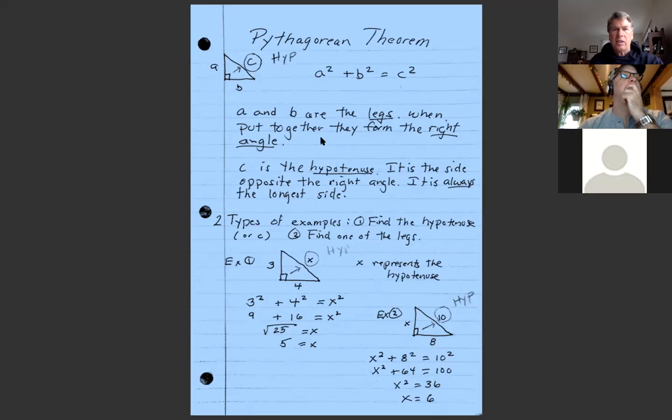From here we get two types of examples that we can figure out. One is to find the hypotenuse, two is to find one of the legs. My first example down here, I'm given my two legs, their lengths three and four. They would represent a and b, and I don't know the length of the hypotenuse.